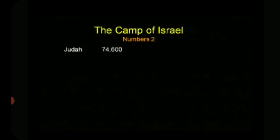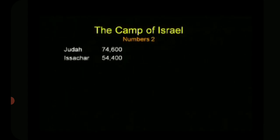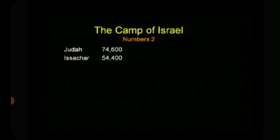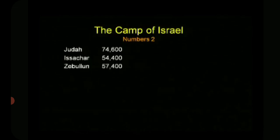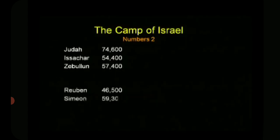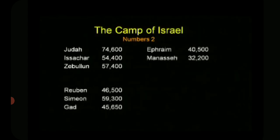When you go through Numbers chapter 2, you discover that Judah was 74,600, Issachar 54,400. We discover that the 12 tribes are clustered into four camps. As you go through these numbers, you might ask: why are these numbers in your Bible?